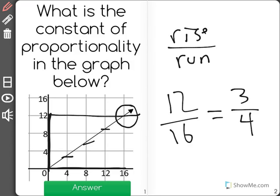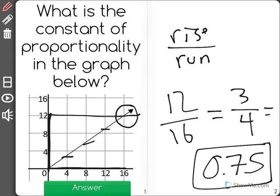But we also want the constant of proportionality in decimal form. So 3 fourths in decimal form is equal to 0.75 for the correct answer.